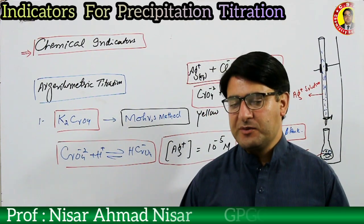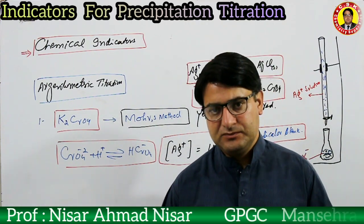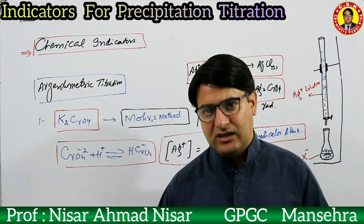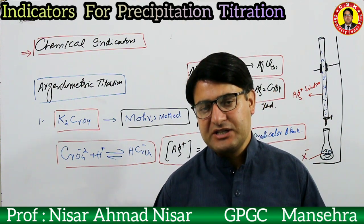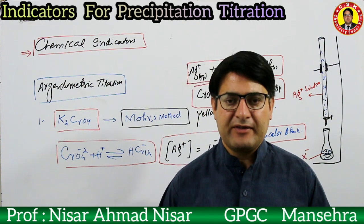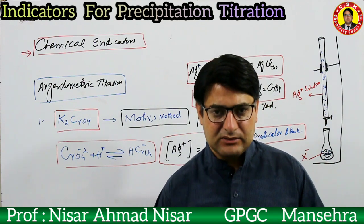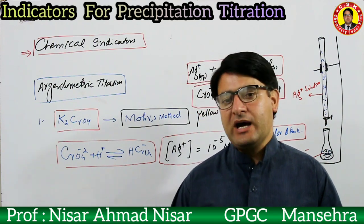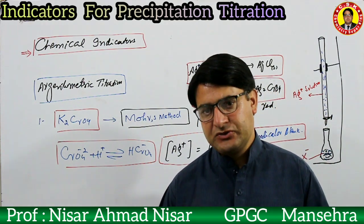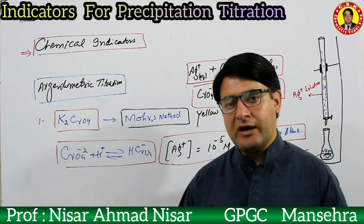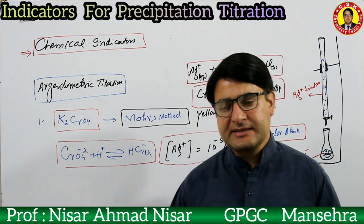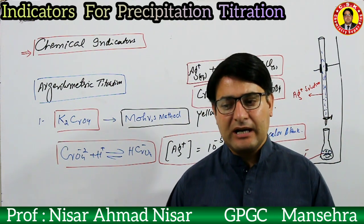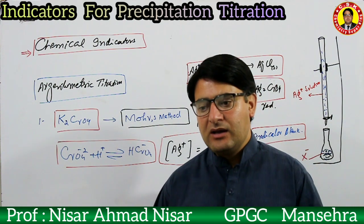Bismillahirrahmanirrahim, Assalamu Alaykum students. I am Professor Nassar Eman Nassar and you are watching my YouTube channel Chemistry Super King. Dear students, we are here in the BA series. Today we will discuss a topic from analytical chemistry — that is indicators used in precipitation titration.